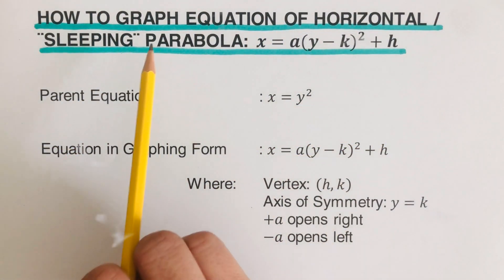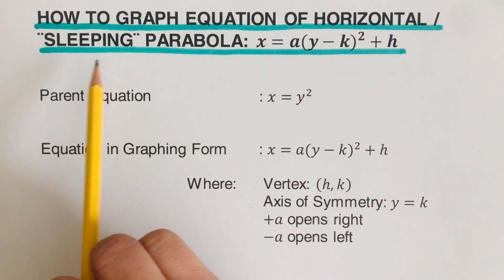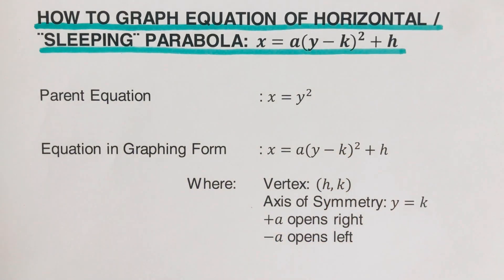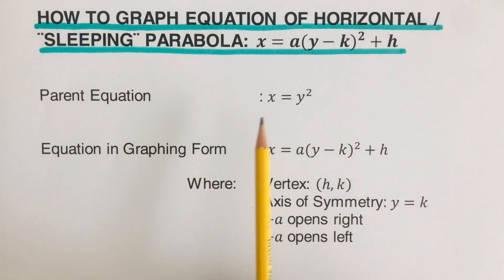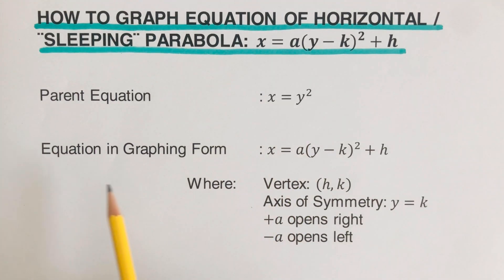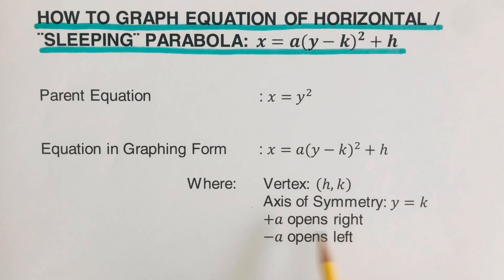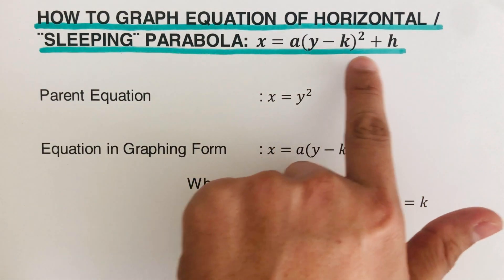In this video we are going to graph the equation of a horizontal, or otherwise called a sleeping parabola, of the form x equals a times (y minus k) squared plus h. The parent equation is x equals y squared. In this graphing form, h and k represent the vertex, the axis of symmetry is y equals k, and when a is positive the graph opens right; when a is negative the graph opens left.